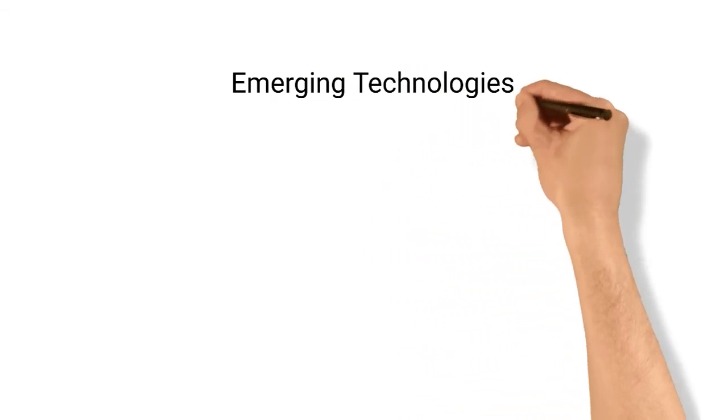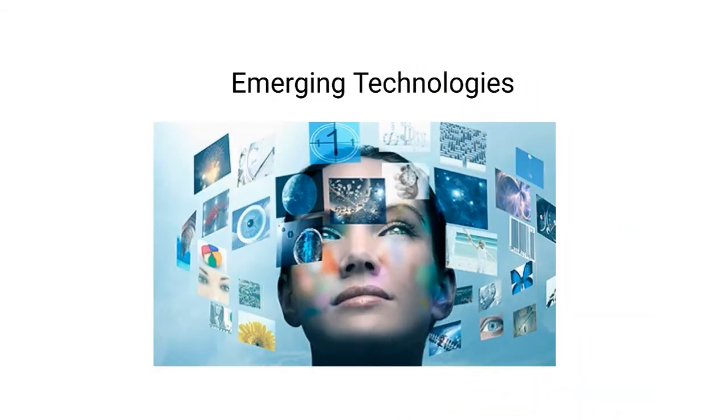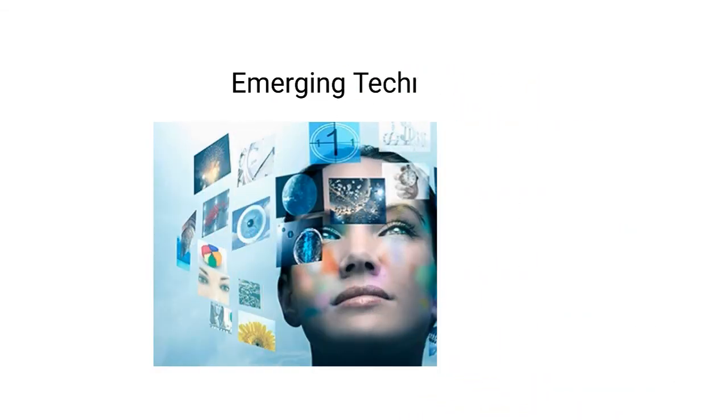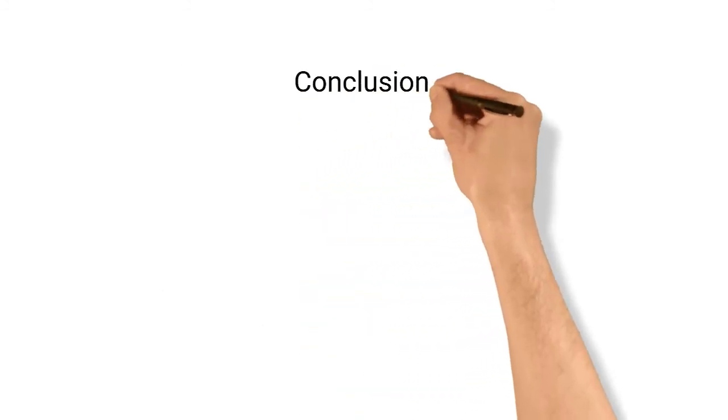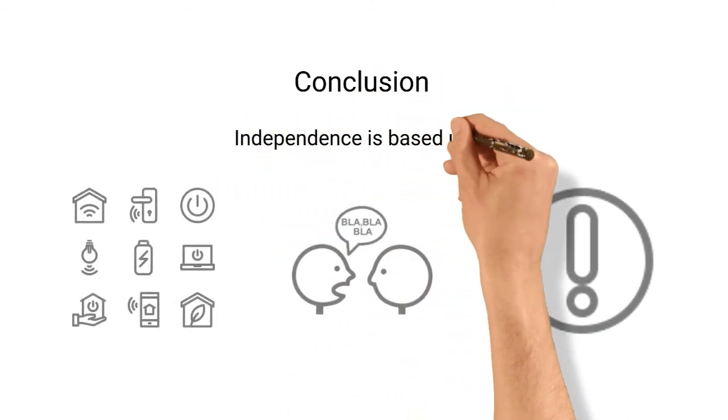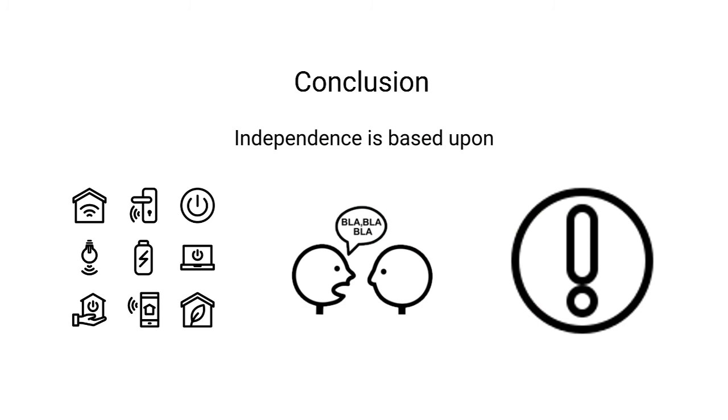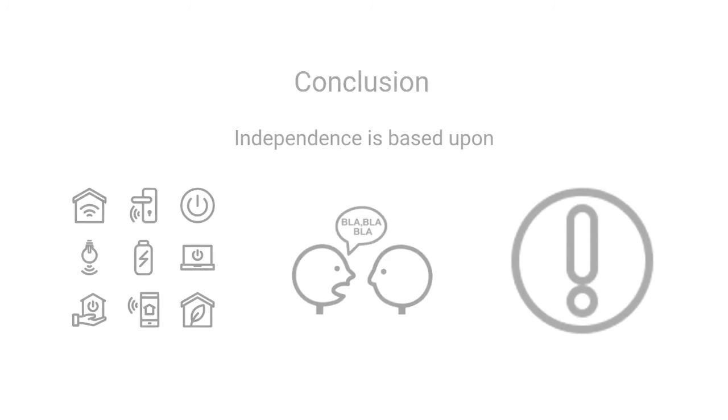As new technology emerges, so increasingly our needs and preferences will be capable of being predicted, changing the environment according to our habits and behavior. Independence based on control, communication and access to information increasingly is a realistic aspiration for many.